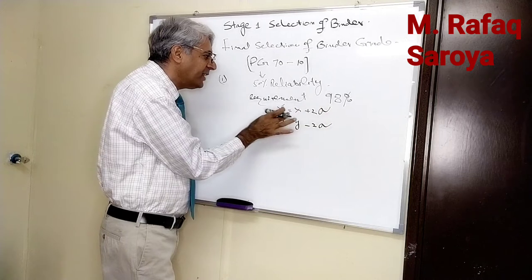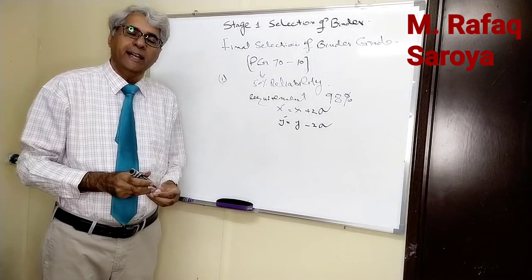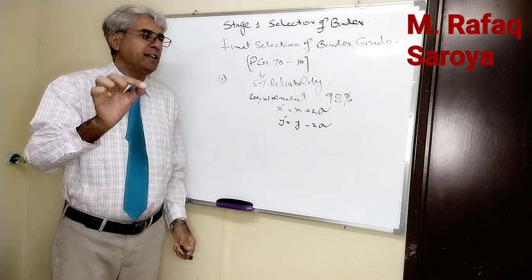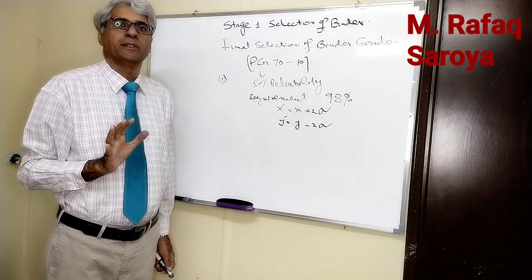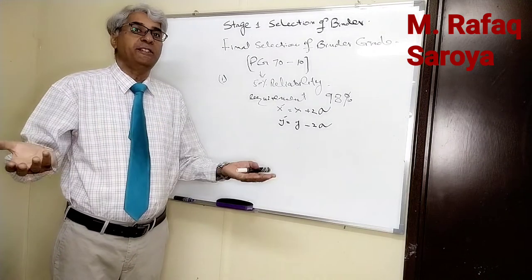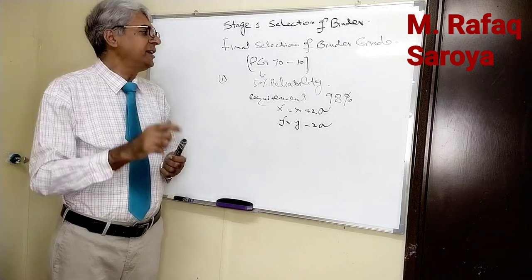After getting this positive value and this negative value, whatever value we are going to select, it is going to have 98% reliability. It means 98% chance that in future the temperature will not reach this condition.